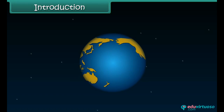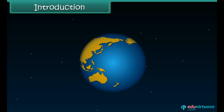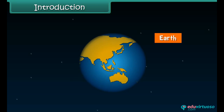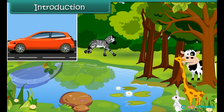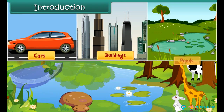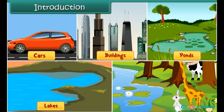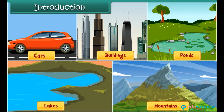we all live on a small blue planet called Earth. We see living things such as trees, animals, as well as non-living things like cars, buildings, ponds, lakes and mountains around us. All these things are found on our planet Earth. In this module, you will learn about the Earth and what it consists of.